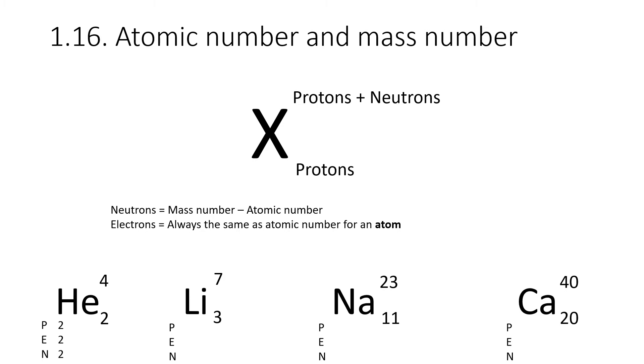Let's do lithium. Mass number seven, atomic number three. We've got three protons, which means that we therefore also have three electrons. Because our mass number is seven, we do seven take away three equals four, and that gives us our number of neutrons.